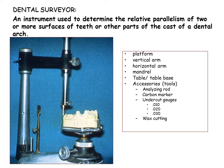The principal parts of the surveyor are as follows: 1. Platform on which the base is moved. 2. Vertical arm that supports the superstructure. 3. Horizontal arm from which the mandrel suspends. 4. Table to which the cast is attached. 5. Base upon which the table swivels.